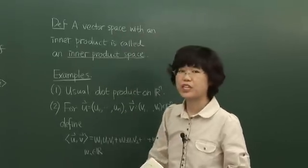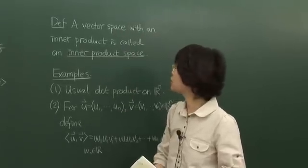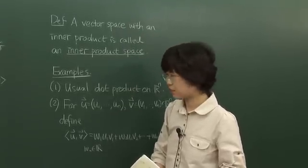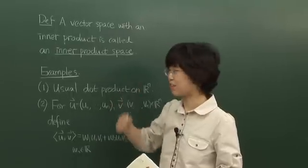A vector space with inner product defined on it is called an inner product space, which is the title of this chapter.